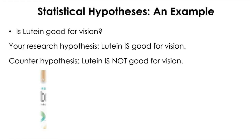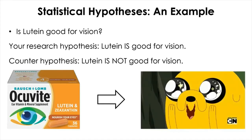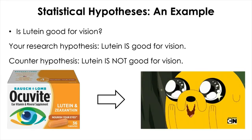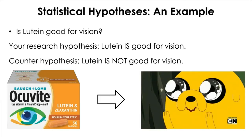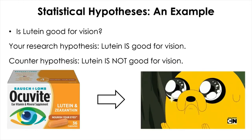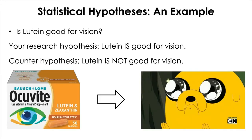Let's take a look at an example. Consider the research question: whether or not taking lutein supplement is good for vision. Lutein is a chemical known to be concentrated in the macula, which is responsible for the most accurate vision in the back of the eye. In some big studies on AMD — age-related macular degeneration — the data suggested that the chemical may have some beneficial effect on slowing down the progress of the disease.